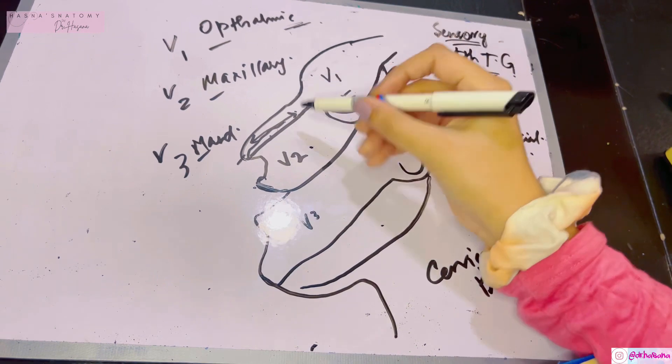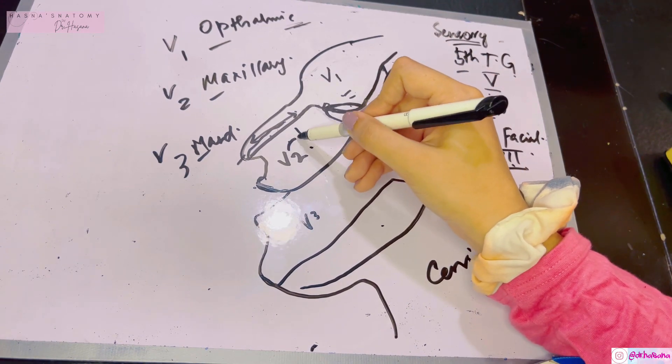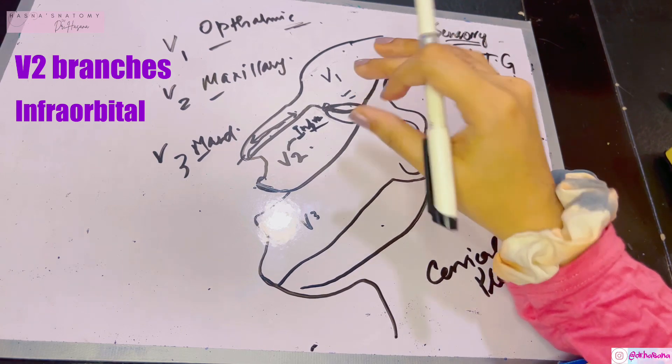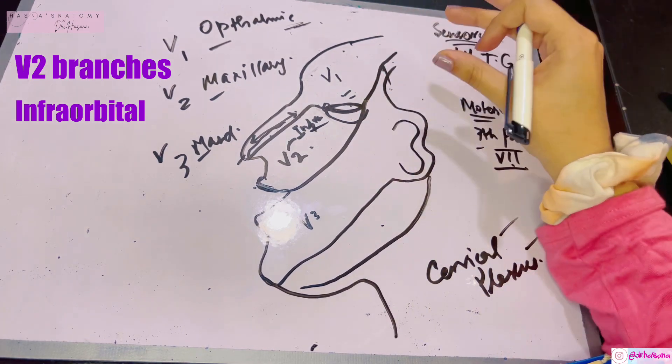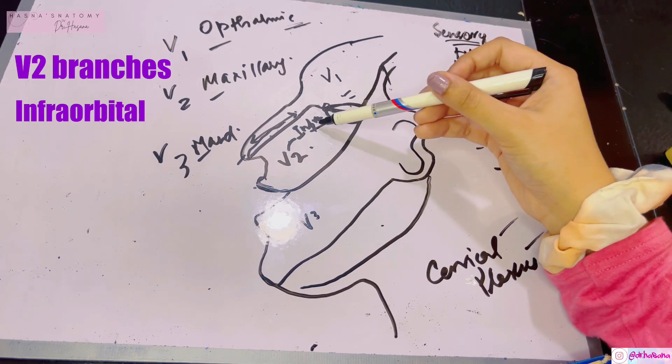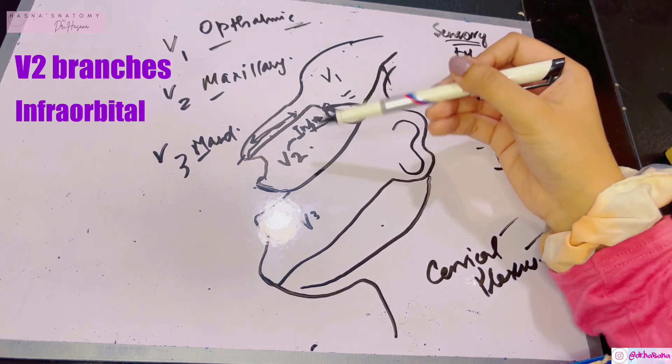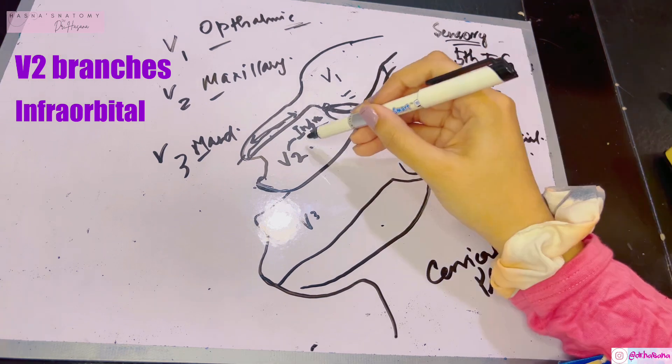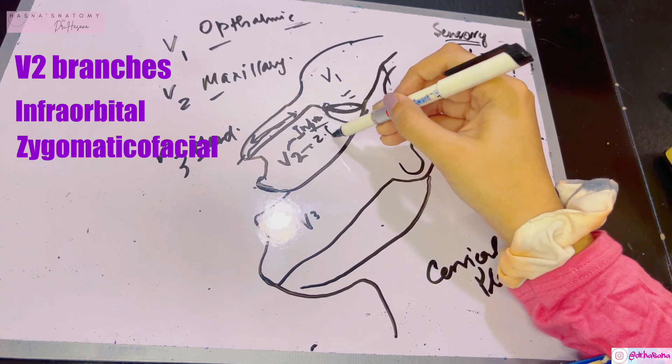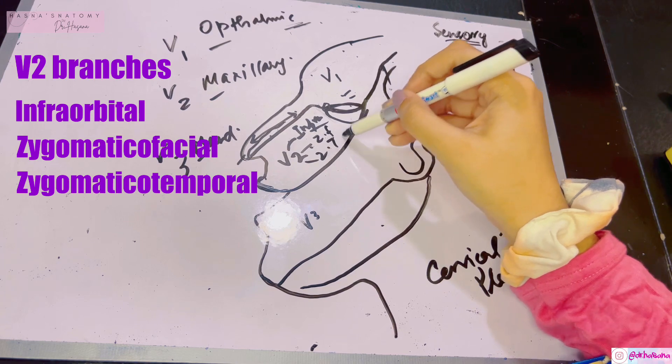In V2, we have three branches. The most important branch is the infraorbital nerve because it's used for infraorbital nerve blocks, which is important for dentists especially. Infraorbital nerve blocks are used to block the V2 division and in trigeminal neuralgia. V2 also gives the zygomaticofacial and zygomaticotemporal nerves.